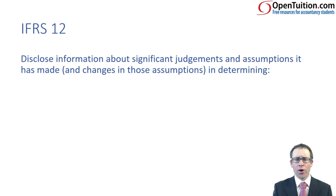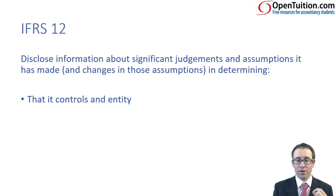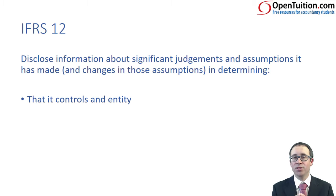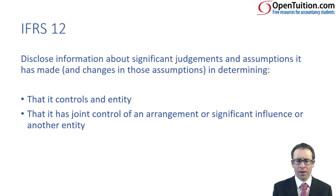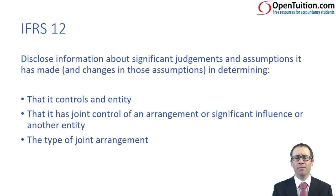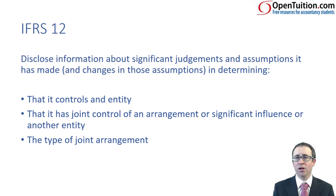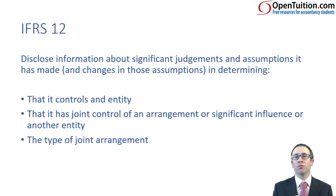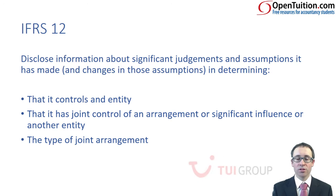IFRS 12 requires you to disclose information about significant judgments and assumptions made, and any changes in determining that you control an entity — so why do you have a subsidiary and what led you to treating it as such? Why you have joint control or why you have significant influence over another entity. When looking at joint arrangements, you disclose information about the type of joint arrangements. Beyond explaining why and how you've consolidated an entity, and why it's an associate or joint venture, the standard also requires additional disclosure about material joint ventures and material associates to help users judge the risks associated with them.